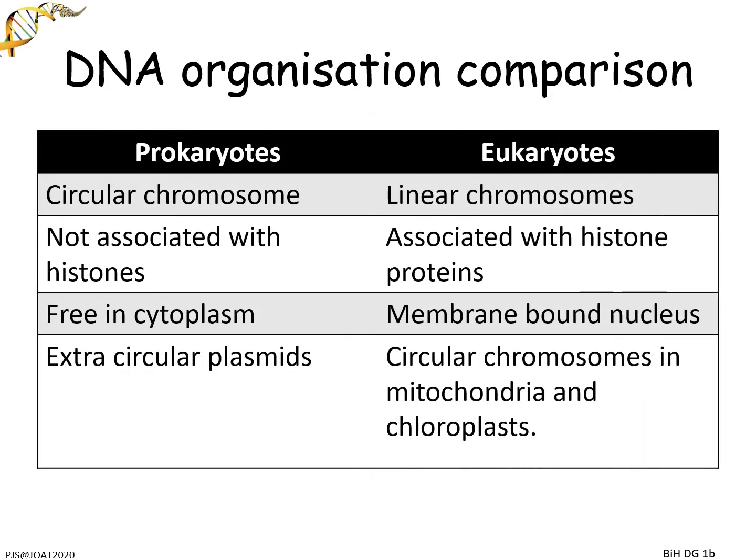Overall: in prokaryotes you get a circular chromosome, whereas in eukaryotes you have linear chromosomes. In prokaryotes there is no association with histones - the chromosome is free in the cytoplasm. In eukaryotes the DNA is associated with histones so it can be packed, and it's enclosed in the nucleus. Prokaryotes have circular plasmids. And in eukaryotes, the mitochondria and chloroplasts also have circular chromosomes.